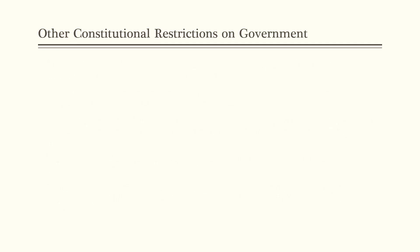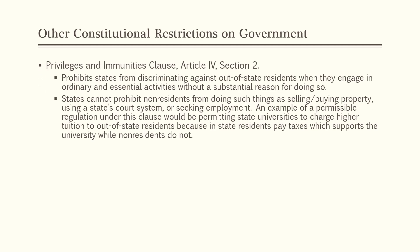There are some other constitutional restrictions on government that are important to point out. One is the Privileges and Immunities Clause located at Article 4, Section 2. This clause prohibits states from discriminating against out-of-state residents within their borders when they engage in ordinary and essential activities without a substantial reason for doing so. States cannot prohibit non-residents from doing such things as selling or buying property, using a state's court system, or seeking employment. An example of a permissible regulation would be permitting state universities to charge higher tuition to out-of-state residents because in-state residents pay taxes that support the university.